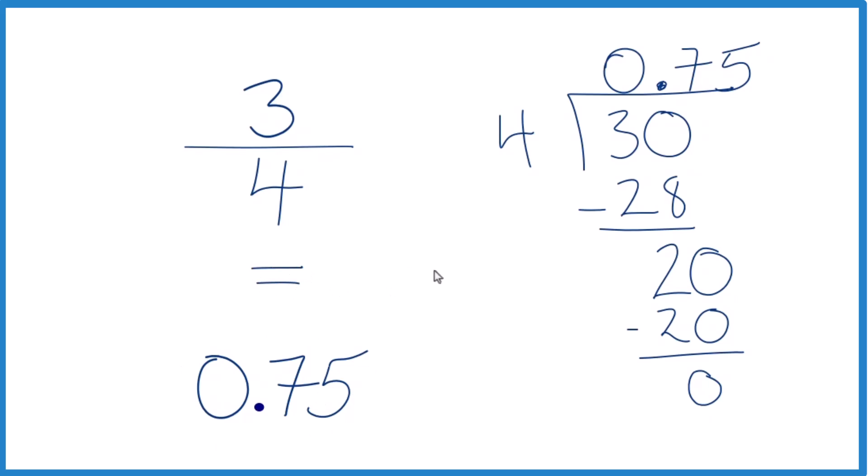That's it. This is Dr. B seeing which is greater, 3 fourths or 0.75. The answer? They're equal. Thanks for watching.